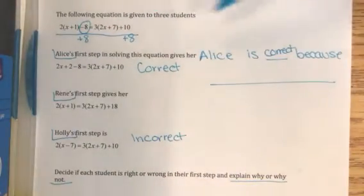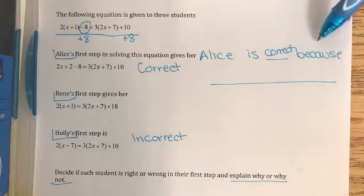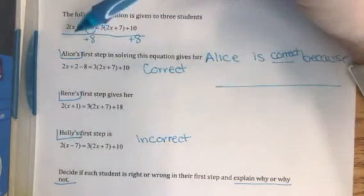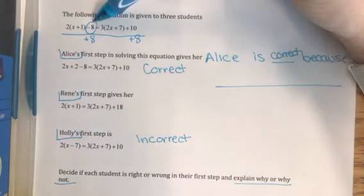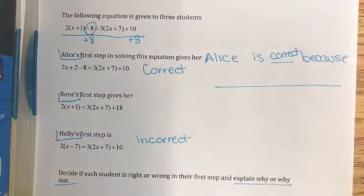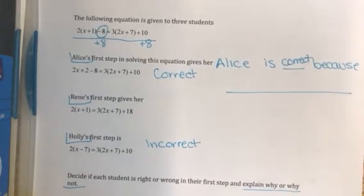So we would say Holly is incorrect because in her first step she tried to combine a positive 1 with a negative 8. The positive 1 is inside the parentheses and cannot be combined with the negative 8.